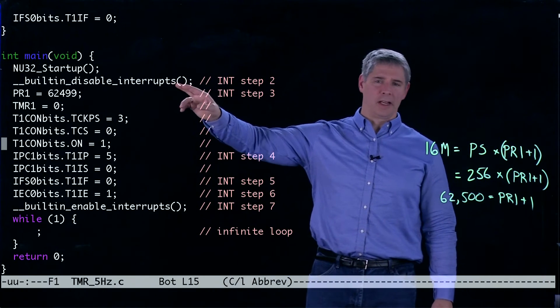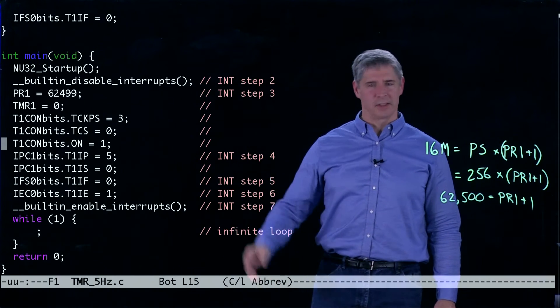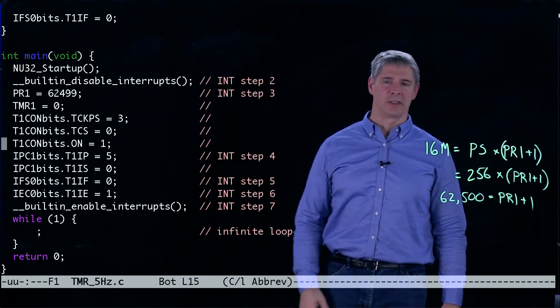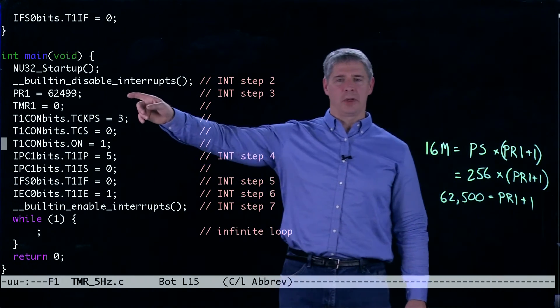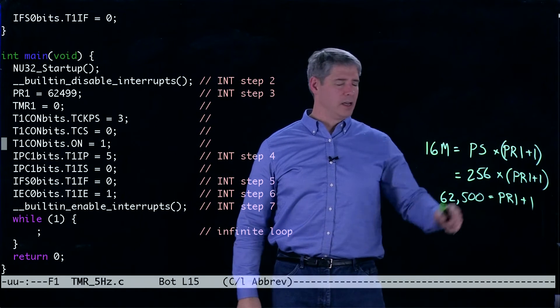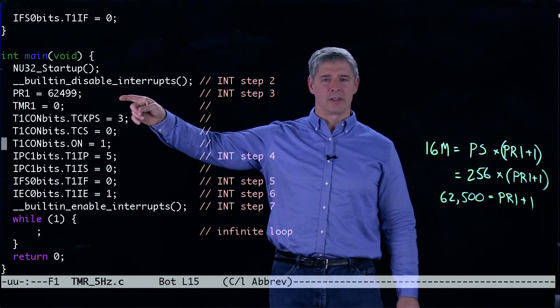The first step for setting up an interrupt is to turn off, or the second step is to disable the interrupts of the CPU. Here we use the fact that we just calculated PR1 to be 62,499.